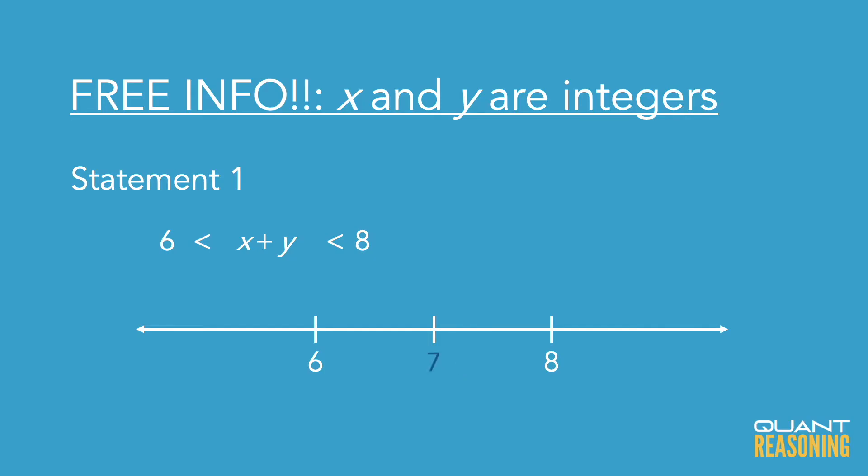Well, we know that X is an integer and Y is an integer. Therefore, their sum X plus Y is also an integer. And there's only one integer between six and eight. So the sum X plus Y must be seven.